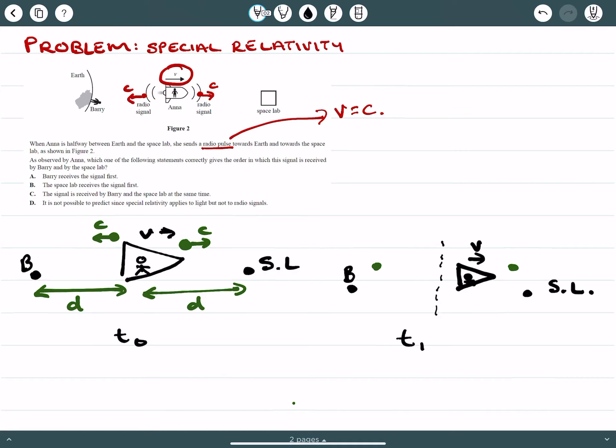But what we would notice here is that Anna is likely to see this photon be received by the space station first off rather than Barry. You've got to remember that this photon has to be travelling back at the speed of light for Anna to observe it.